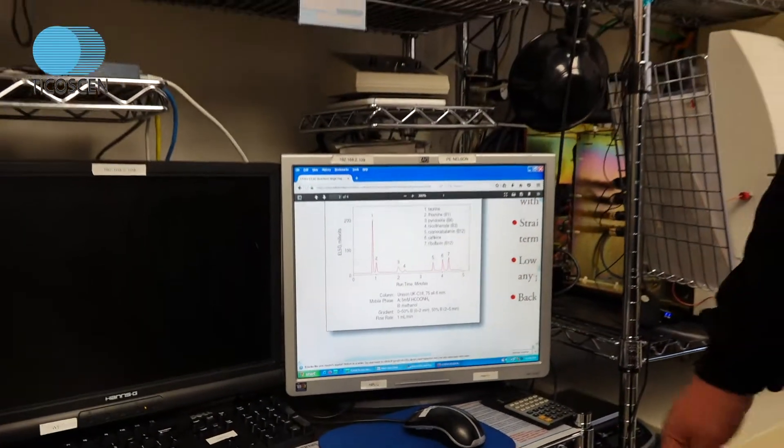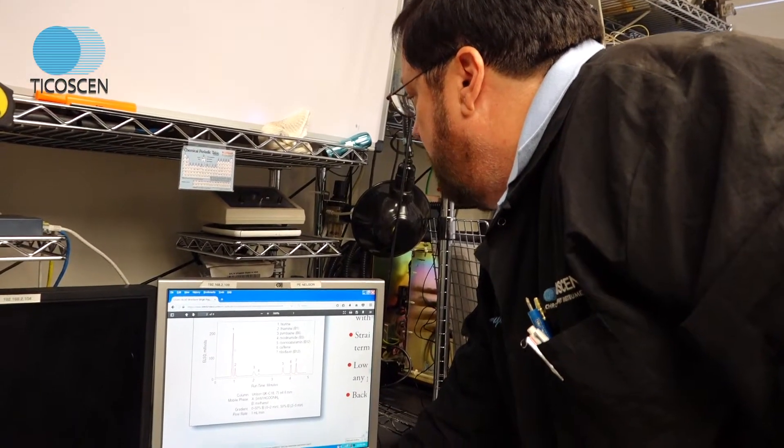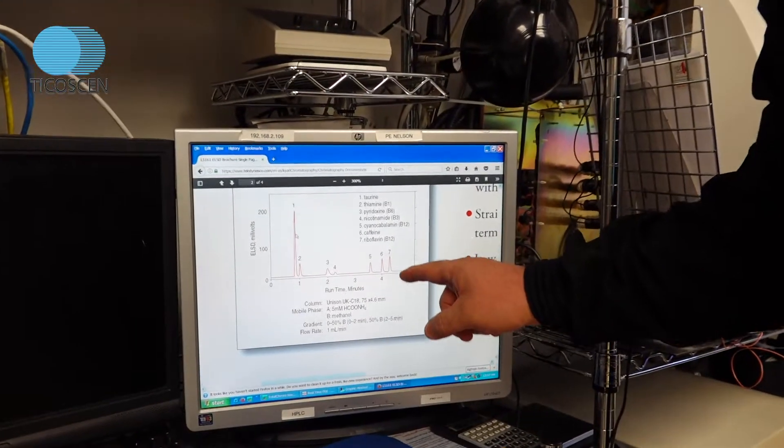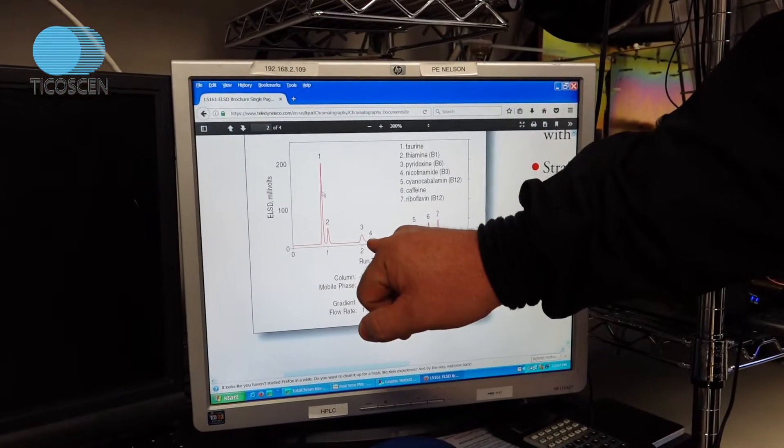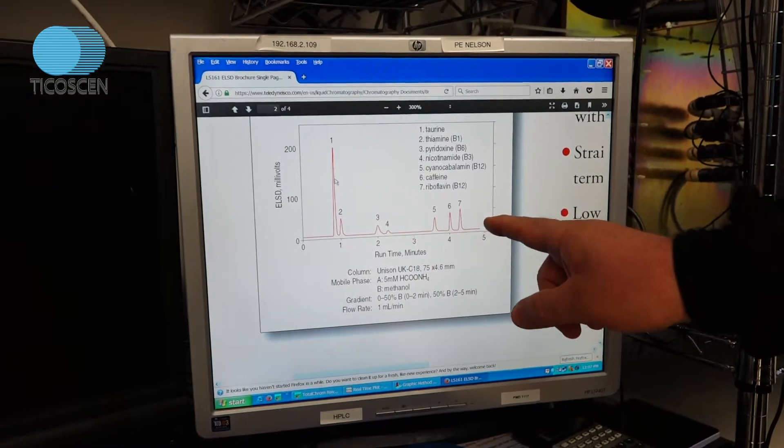So this is a typical ELSD analysis of some compounds that are non-chromophoric. And the larger peak is clearly the major component to this mixture. Your minor component is going to be number four. And your intermediates are two, five, six, and seven.